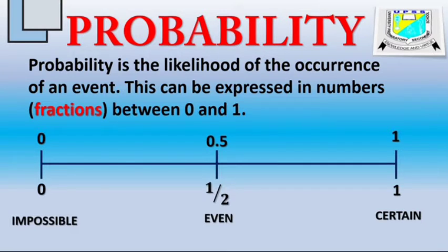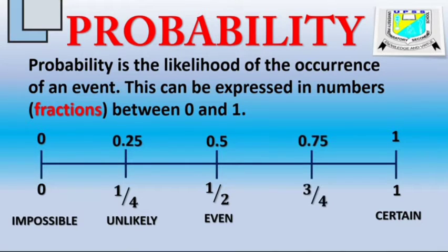Events less than half are regarded as unlikely events, example is 1 over 4 or 0.25. And events greater than half are regarded as likely events, example, 3 over 4 or 0.75.